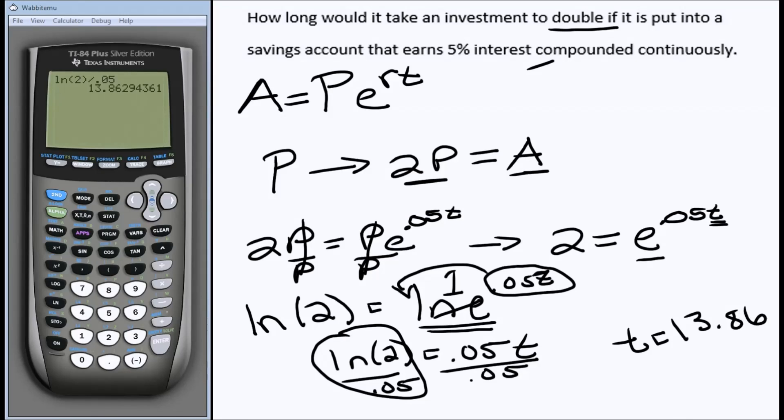Now, we'll have to be careful as to what the problem asks as far as rounding is concerned. It may ask to round to the nearest year, in which case the answer would be 14. Or it may be two decimal places, just like this answer provided.